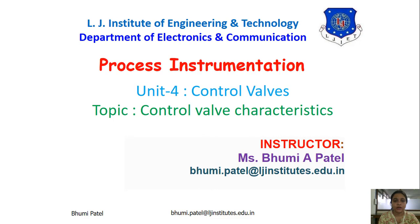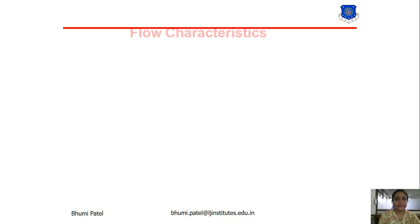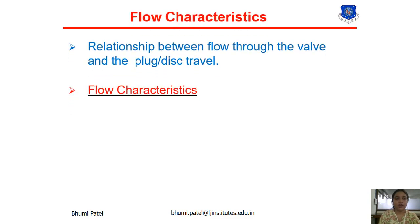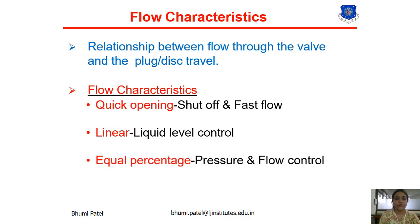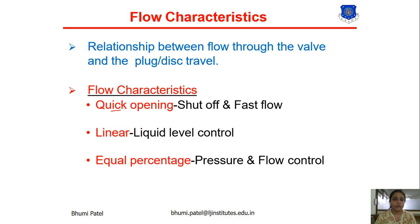Today we will study about the control valve characteristics. In the last session, we studied about the flow characteristics. The flow characteristic is the relationship between flow through the valve and the plug travel. We have basically three types: quick opening, used for on-off and fast flow; linear, used for liquid level control; and equal percentage, used for pressure and flow control.